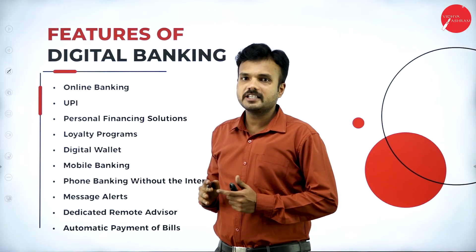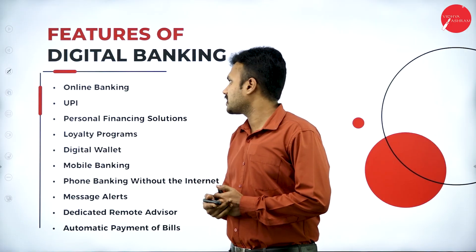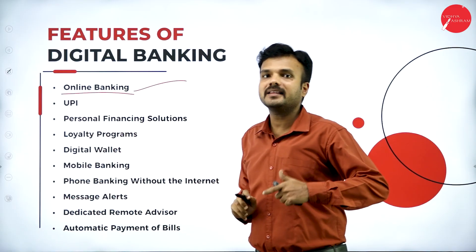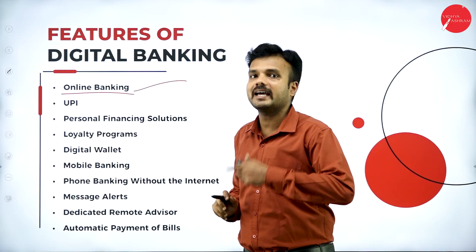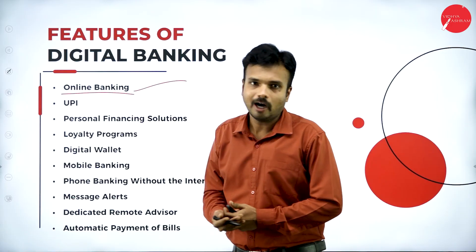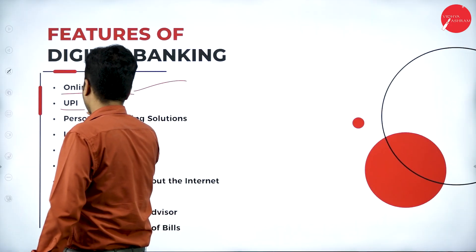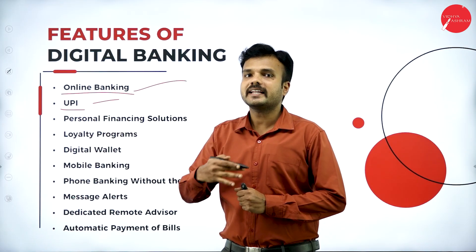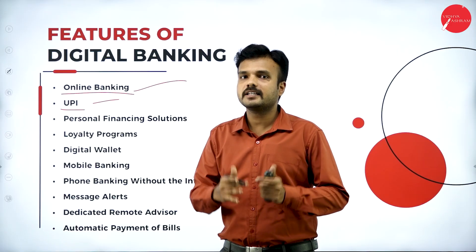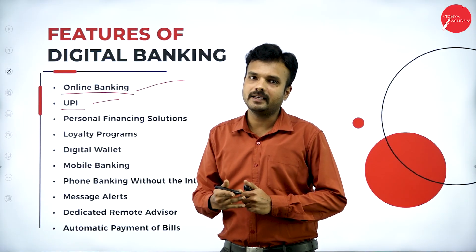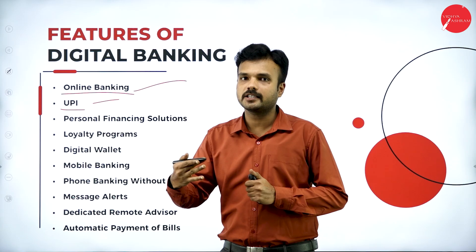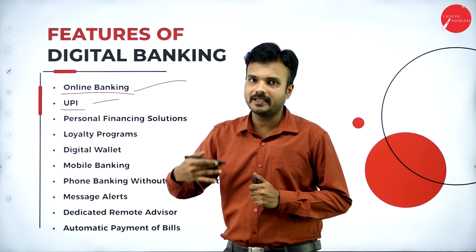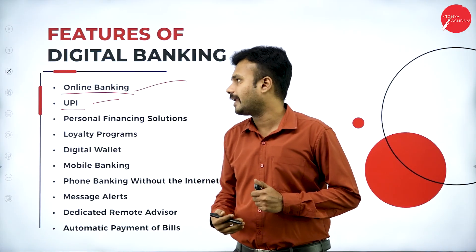Features of digital banking. First feature: online banking. Whatever transaction is going to happen virtually through online with the help of internet, we call it online banking. Second feature: UPI — Unified Payment Interface. By using UPI, we can transfer money within a fraction of a second. Best examples are Amazon Pay and PhonePe. The transaction is debited and credited within a fraction of a second.